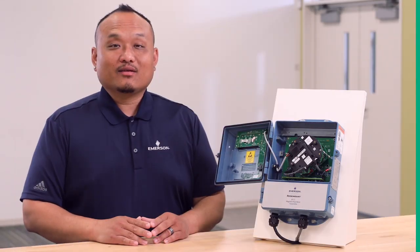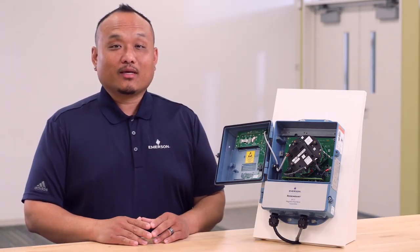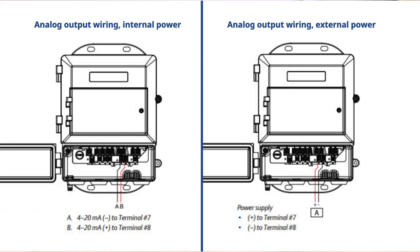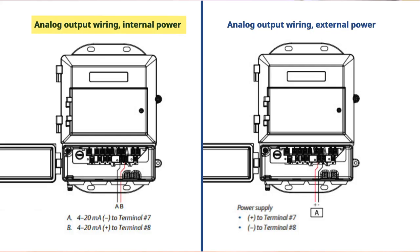Second, verify the analog 4 to 20 milliamp loop wiring. If the transmitter is supplying loop power, the positive wire must land on terminal 8 while the negative wire lands on terminal 7. If there is an external power supply powering the analog output, the negative wire must land on terminal 8 while the positive wire lands on terminal 7.